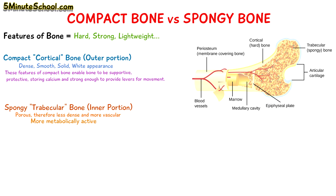This porous nature makes spongy bone less dense compared to compact bone. In fact, spongy bone is more vascular and it contains the red bone marrow where red blood cells are made. Because of its nature, spongy bone is said to be weaker and more flexible in comparison to compact bone.